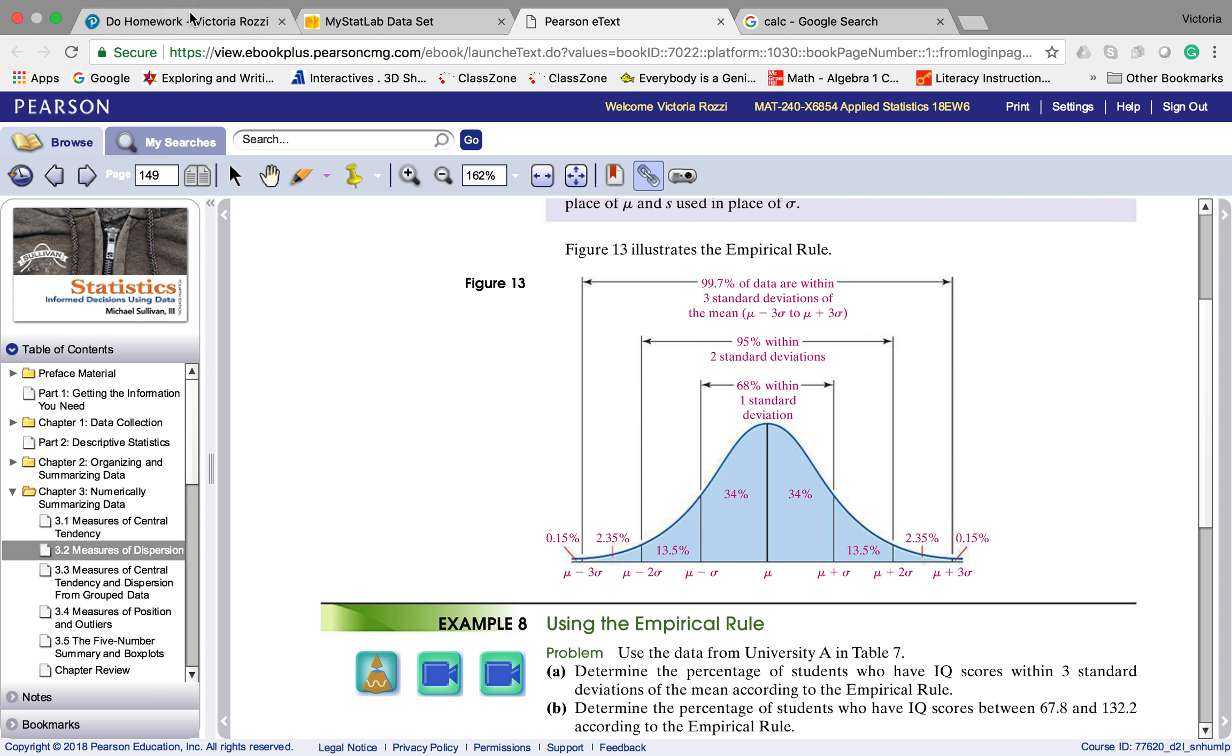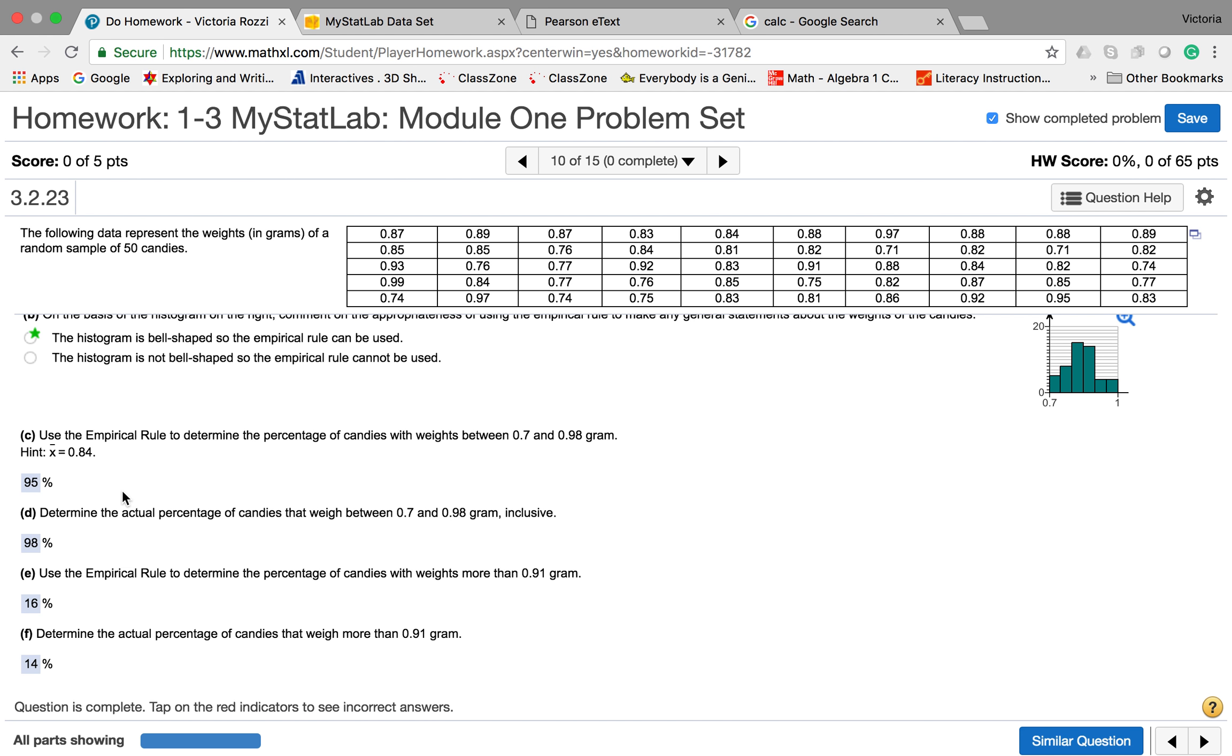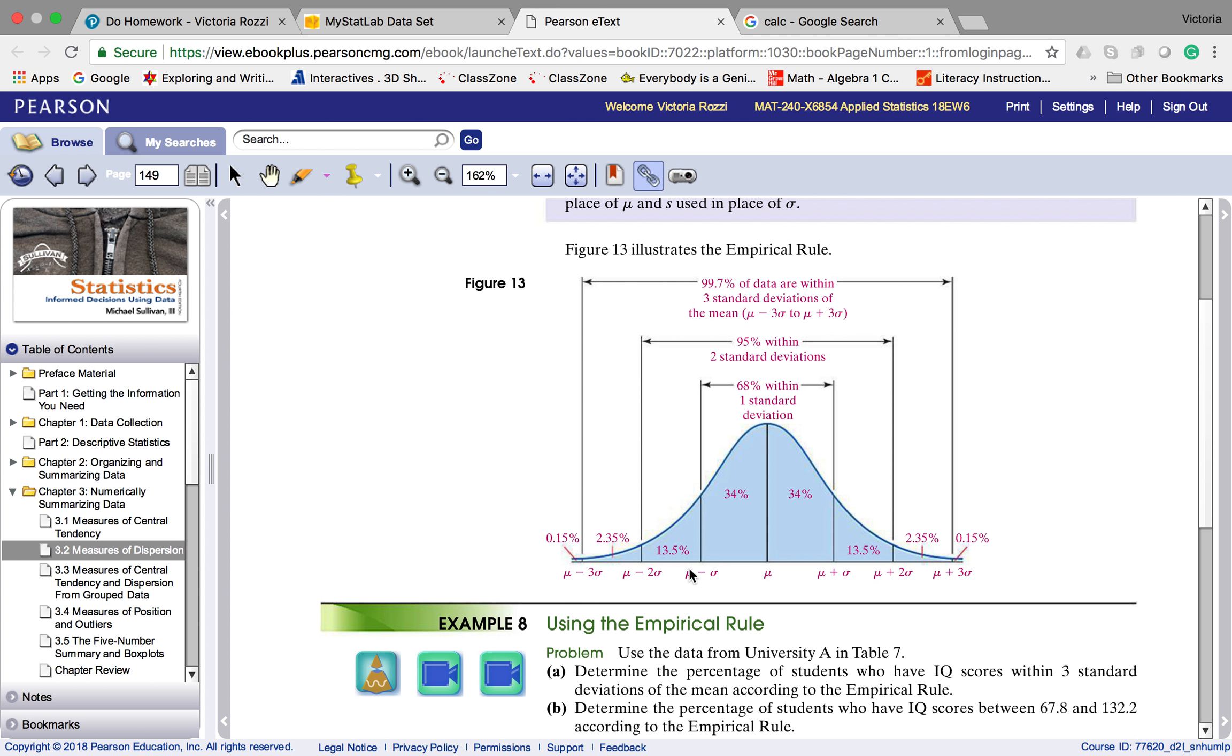Let's talk about how to answer these questions. They're asking what percentage of candies with weights between 0.7 and 0.98, what would be that percentage? How do we find that? If you look here in your text, and hopefully you did make that little drawing, they give you percentages. For example, the mean would be 0.84, and then I have 0.91 here, 34% of my data values are going to be between 0.84 and 0.91.